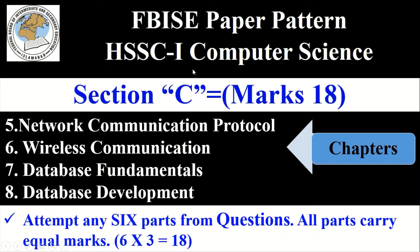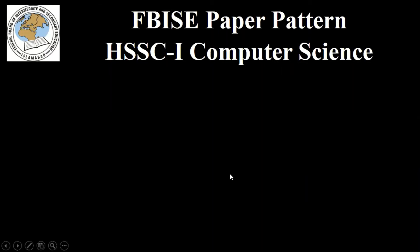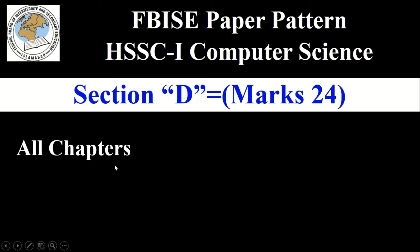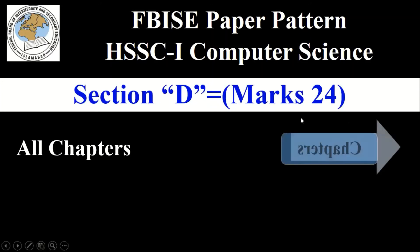Now let's move towards the next section, Section D, which is the last section and has 24 marks. All chapters are included in Section D — there is no restriction to any specific chapters. All chapters, meaning the entire syllabus, are included in Section D.